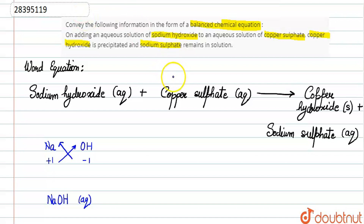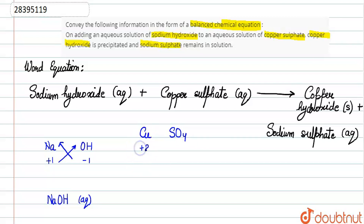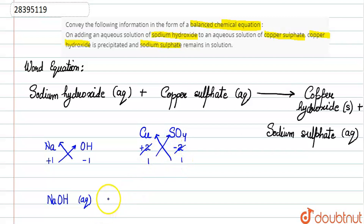अब देखते हैं copper sulfate। Copper sulfate क्या होगा? Cu और sulfate का होता है SO₄। Cu हमारा plus two state में होता है और sulfate होता है minus two state में। यहाँ पर दोनों की state एक-दूसरे के multiple हैं, तो two cross करके one-one पर जाएगी। तो यह बना दिया CuSO₄, और यह aqueous state में है।